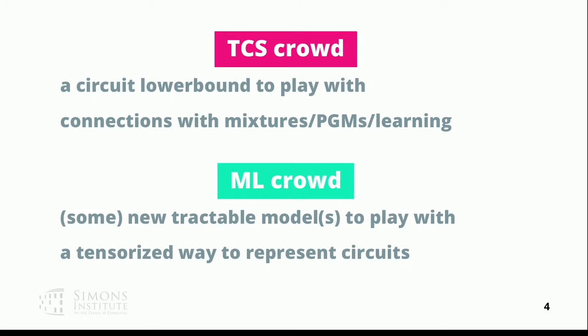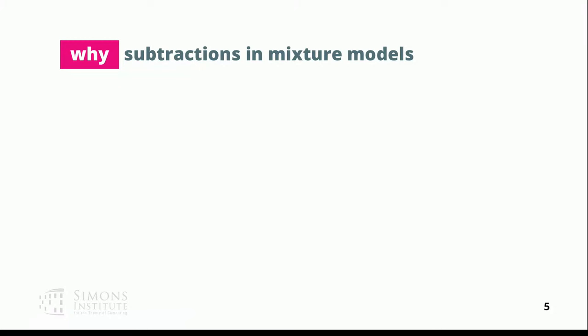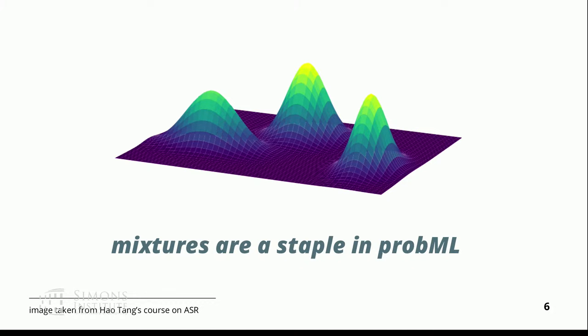Let's start with subtractive mixture models. How many of you actually know what a mixture model is? Okay, many hands raised. So mixtures are beautiful and appear basically everywhere in machine learning — from computer vision to language, speech, and so on. The reason is they allow you to model complex distributions by utilizing simpler distributions. For example, you pick three simple Gaussians, put them together, and you have a distribution more expressive than the single Gaussian components.